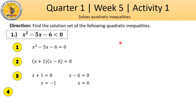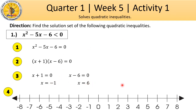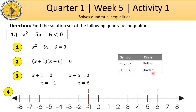Step number 4, use the roots negative 1 and positive 6 to divide the number line into regions. Negative 1 here and positive 6 here. So, we have 1, 2, and 3 regions. Now, we put a circle on our roots. There are two kinds of circles: hollow circle and shaded circle. We use a hollow circle when the inequality symbol is less than or greater than, and a shaded circle when the inequality sign is less than or equal, or greater than or equal. So, we use hollow circles because our inequality symbol is less than.